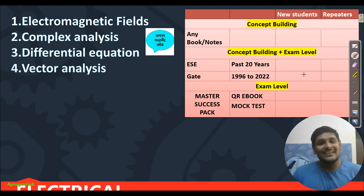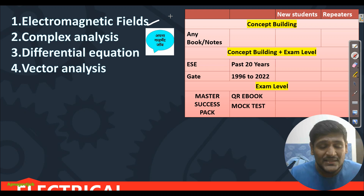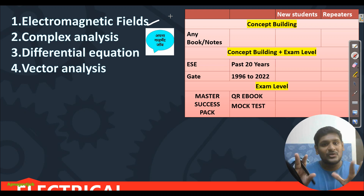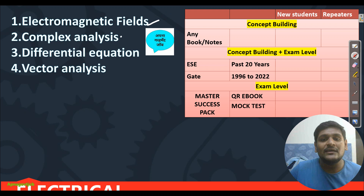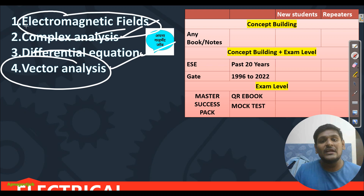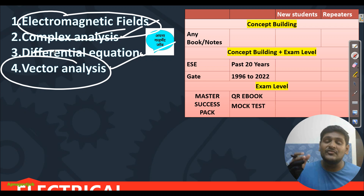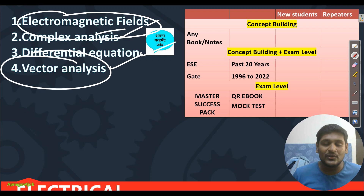Next branch is Electrical. For Electrical in phase 3, the first subject is Electromagnetic Fields. The content is already on their website — go through that and complete it. Then Complex Analysis, Differential Equation, and Vector Analysis. Before going to Electromagnetic Fields, I recommend starting with Vector Analysis first, then EMT, then Complex Analysis or Differential Equation. So for Electrical, we are taking three chapters from Engineering Mathematics and one subject from the technical part.